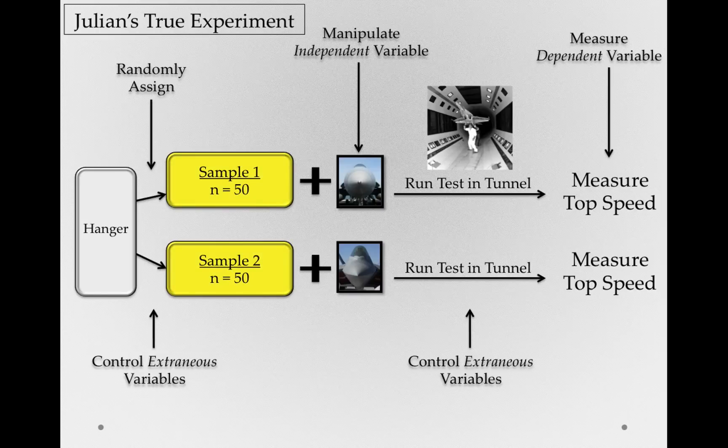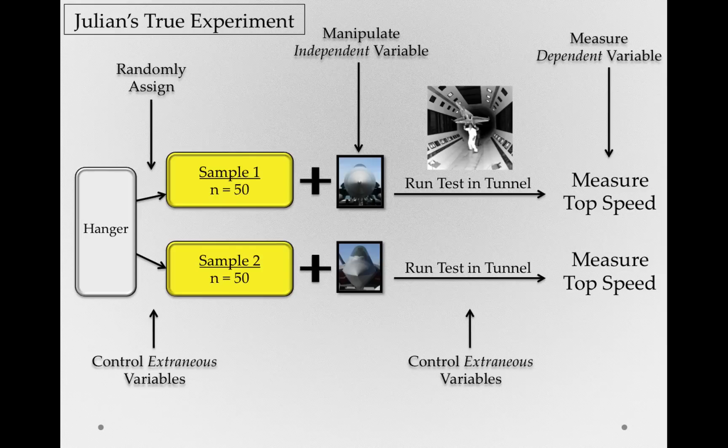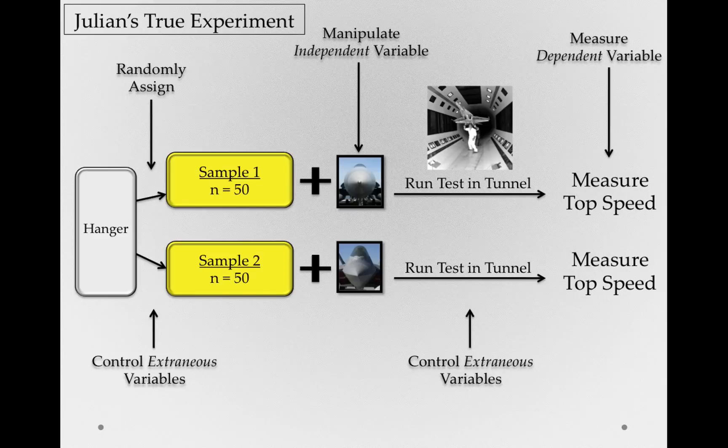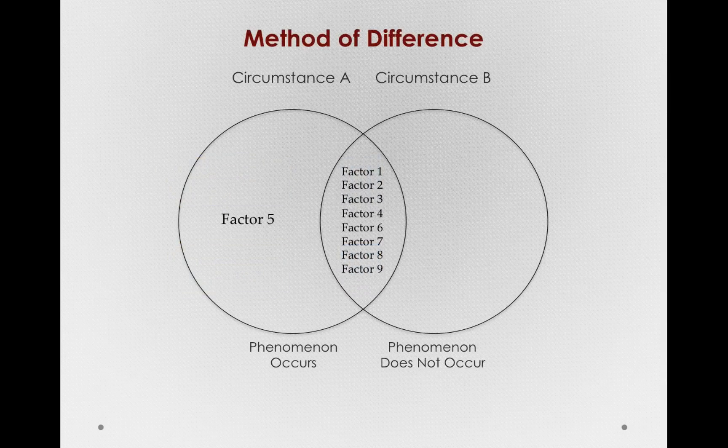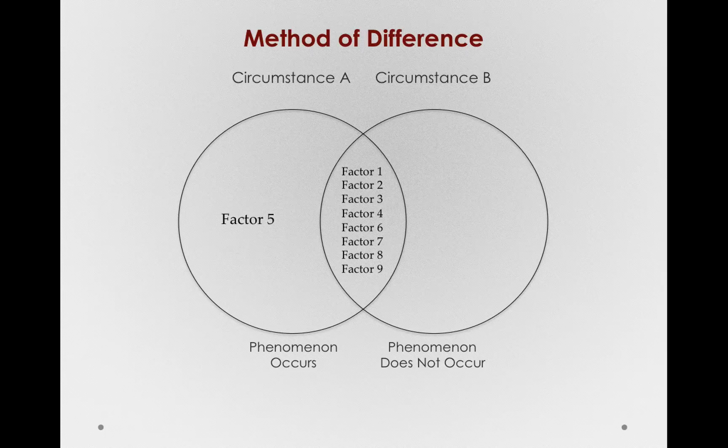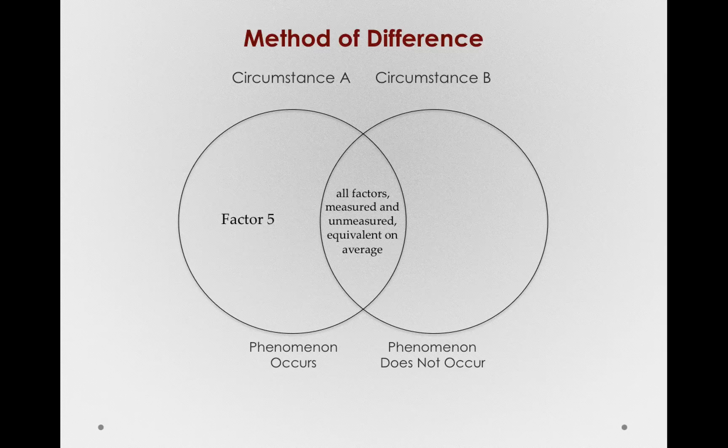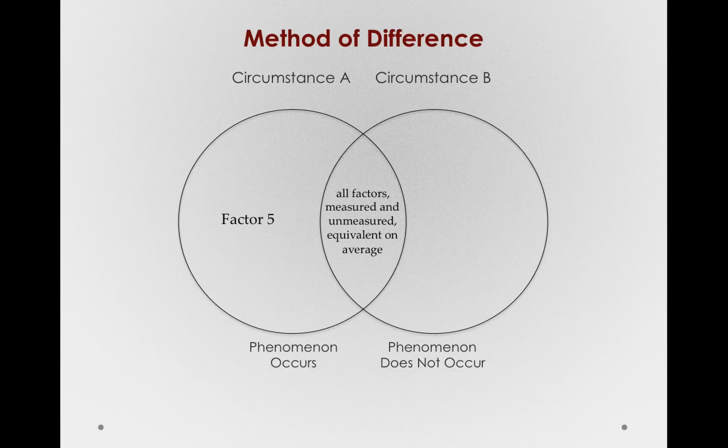Because before we even ran the study, before we even manipulated the independent variable, via random assignment, we made these samples essentially the same on average. All those confounding variables we had before, all the things that messed up our method of difference, are now actually all the same. And in fact, in the center of this Venn, we can see that all factors measured and unmeasured are equivalent on average. Remember, that's what random assignment does. Engine size, wingspan, anything that might have some relation to top speed is now on average about the same in the two different samples.